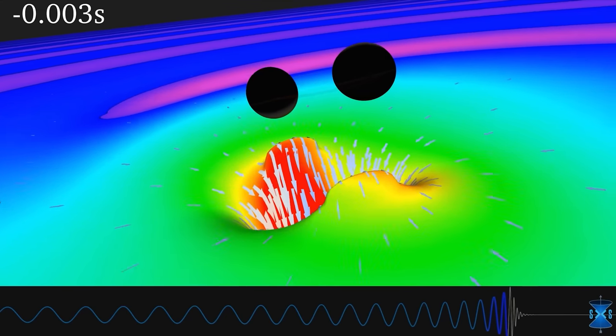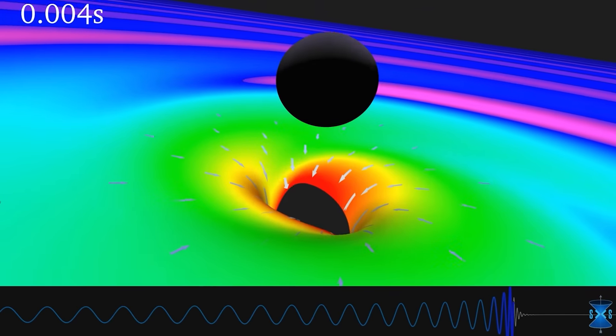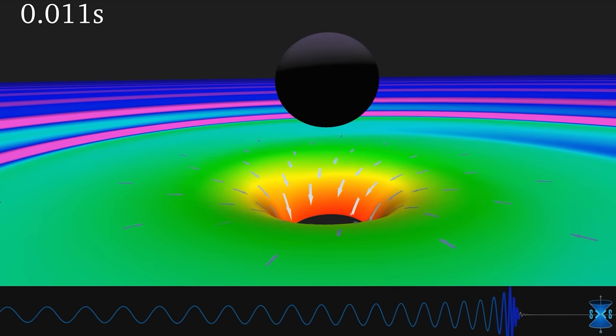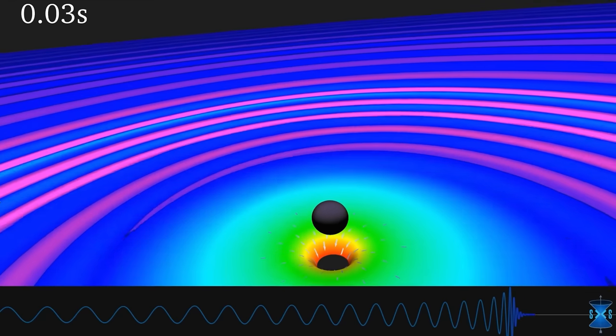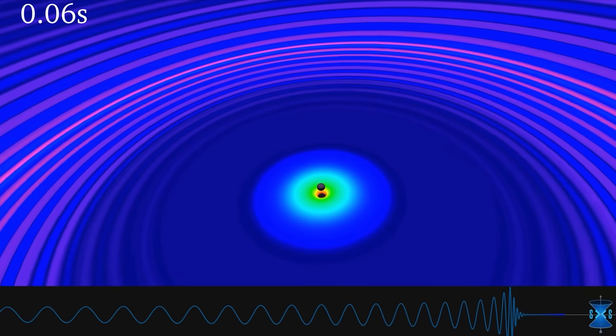On the 14th of September 2015, scientists at the Laser Interferometer Gravitational Wave Observatory detected gravitational waves directly for the first time, a stunning achievement that led to the 2017 Nobel Prize in Physics.